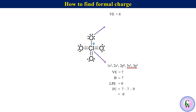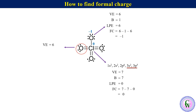For one oxygen (singly bonded): Ve = 6, B = 1, Lpe = 6. Formal charge = 6 − 1 − 6 = −1. For another oxygen (doubly bonded): Ve = 6, B = 2, Lpe = 4. Formal charge = 6 − 2 − 4 = 0. Similarly, the formal charge on the remaining two oxygen atoms will also be 0.